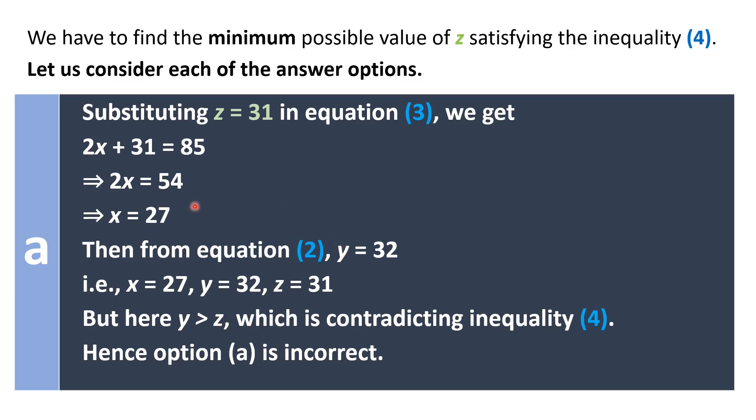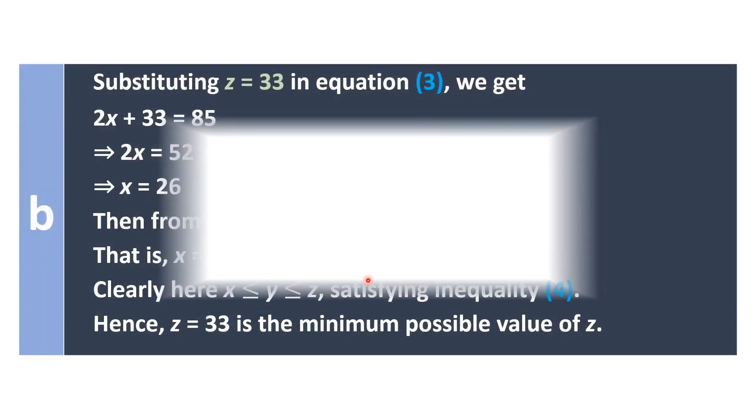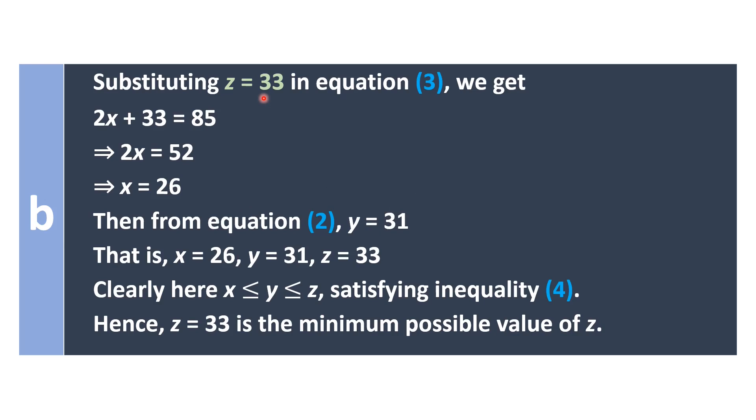That is X equals 27, Y equals 32 and Z equals 31 in this case. But here Y is greater than Z which is contradicting the inequality 4. Hence option A is incorrect. Now let us consider option B where Z equals 33.